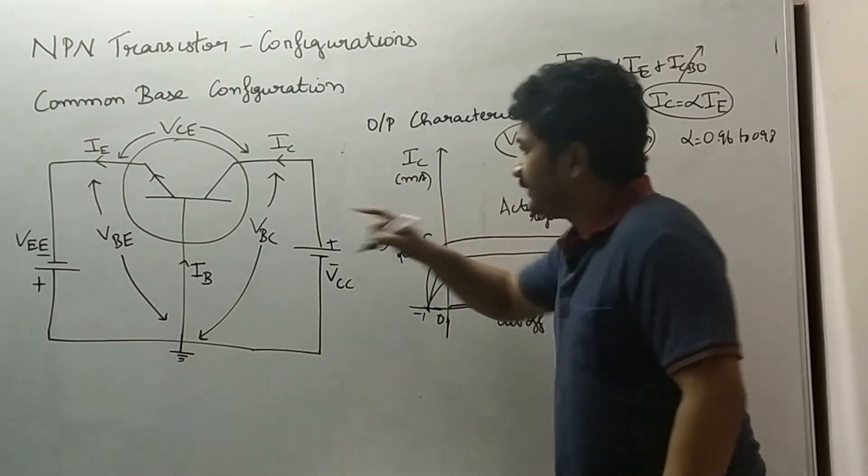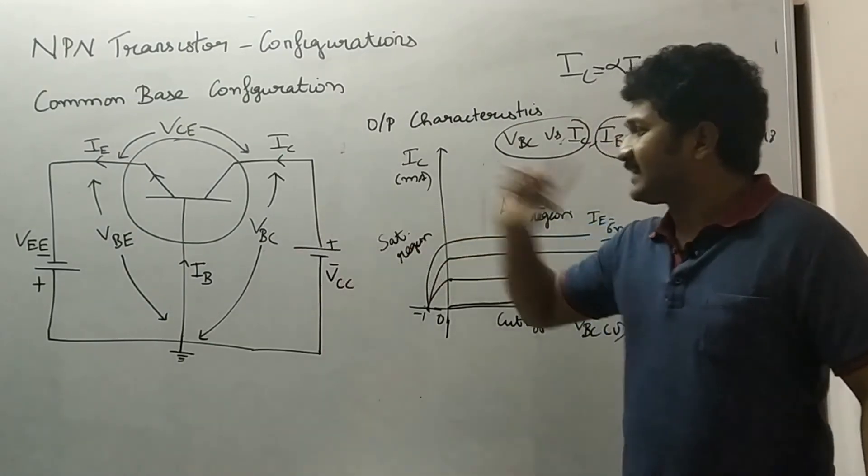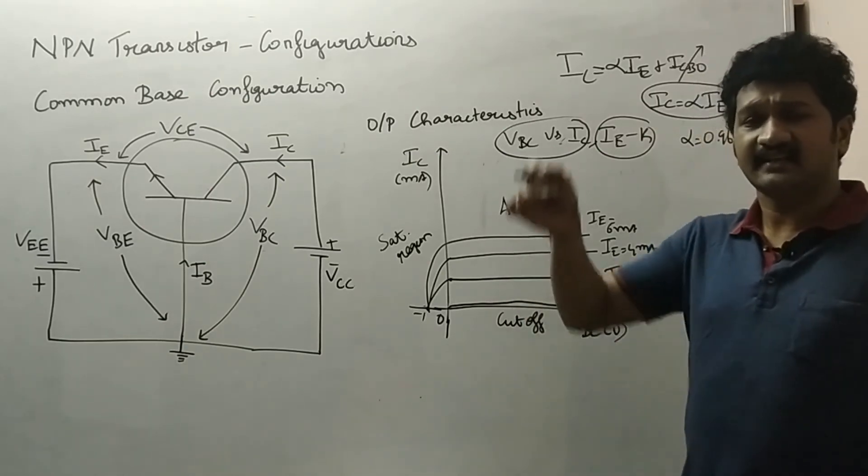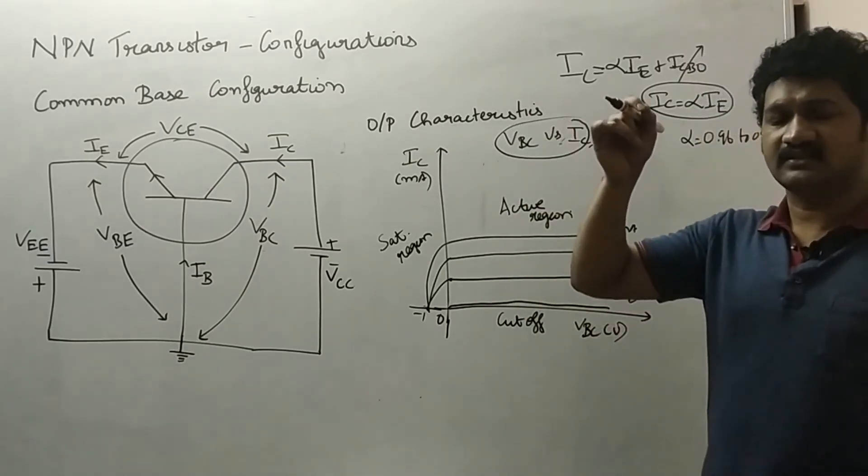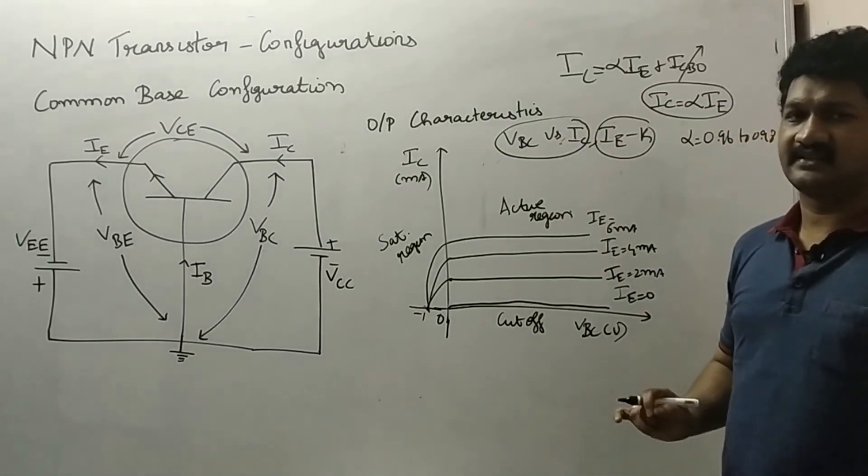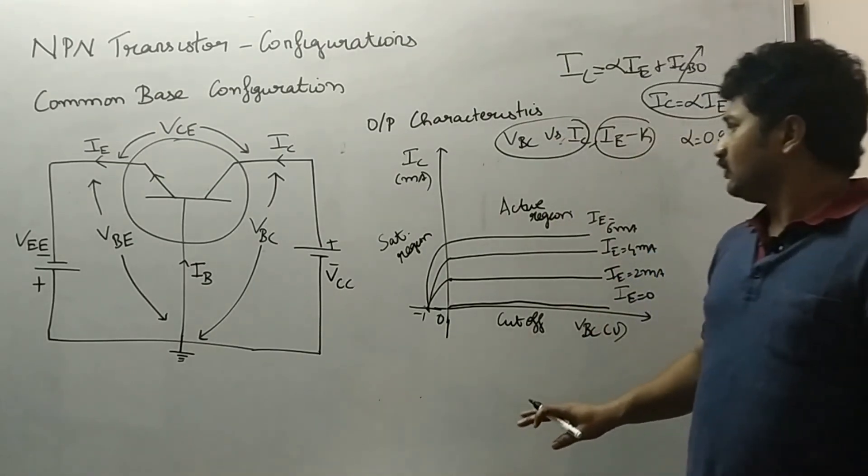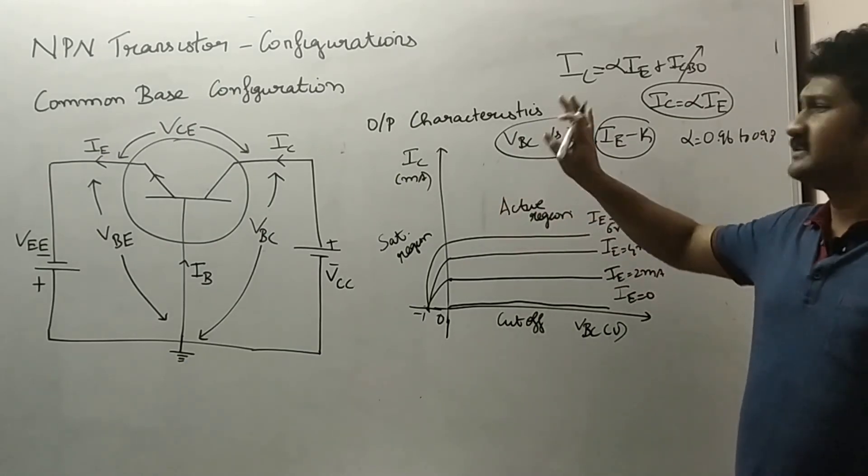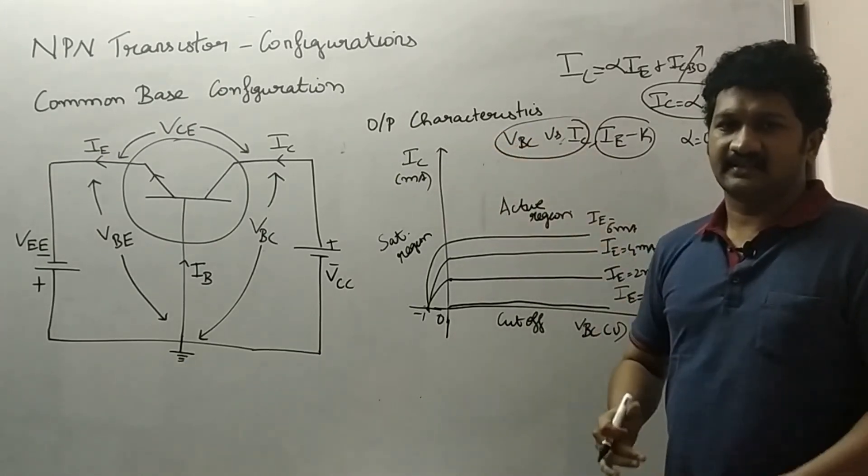Now in saturation region, both base emitter voltage and base collector voltage will be in the forward bias. The transistor acts as a switch and continuous collector current starts to flow through the transistor. This is the explanation of the output characteristics of a CB configuration NPN transistor. Thank you.